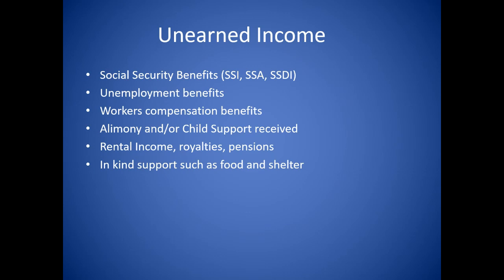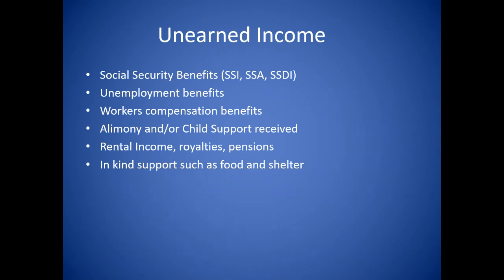Regarding under-income situations, you can receive SSI benefits along with your own benefit or a parent's benefit. If that benefit is under $794 a month, the individual will qualify for some SSI to make up the difference. So if they're getting $500 off a parent's benefit, they're still eligible for $294 from SSI. When working, the parent's portion won't change, but the SSI portion will still be reduced by earned income — though the $500 parent's benefit stays the same.